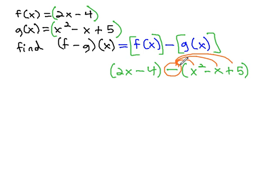We're not just subtracting the x squared, but we're subtracting the whole function. When we do distribute it, we get 2x - 4. The opposite of x² is -x². The opposite of -x is positive x, and the opposite of positive 5 is -5.